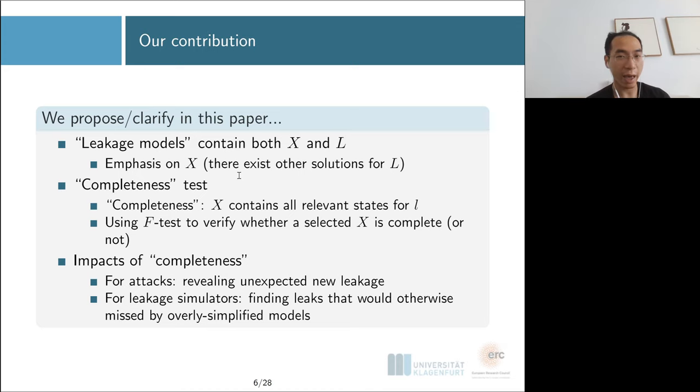What we are trying to propose and clarify in this paper is when we talk about leakage models, we should actually consider both the intermediate states X and the leakage function L. We have quite some experience with the leakage function L—you can use profiling stage or more advanced statistics like the general distinguisher. But if you miss something from the intermediate states, that's the end of the story.